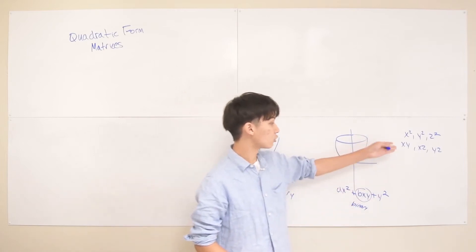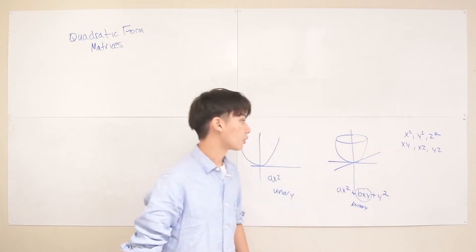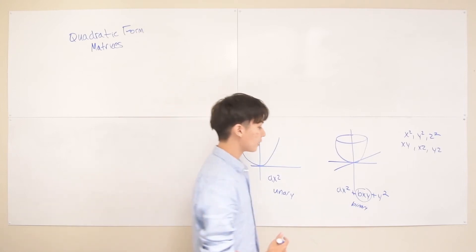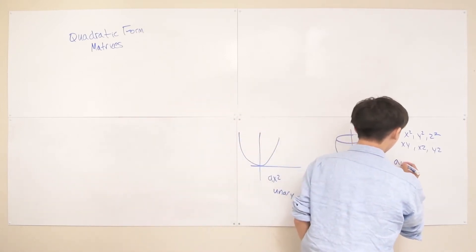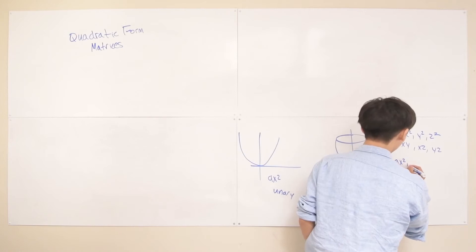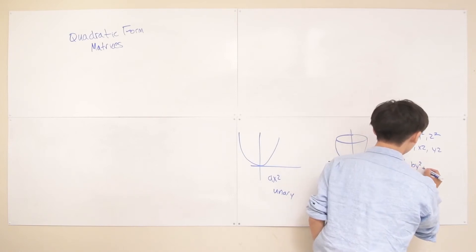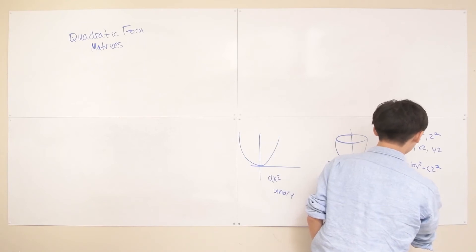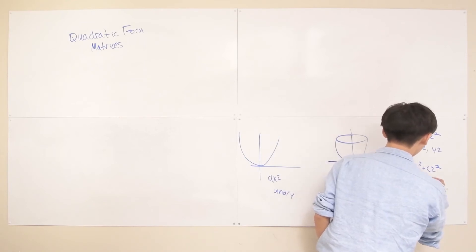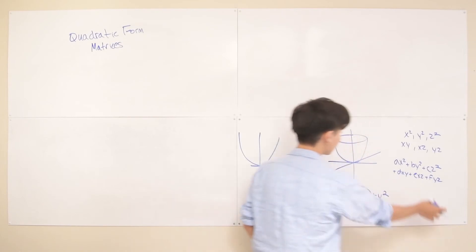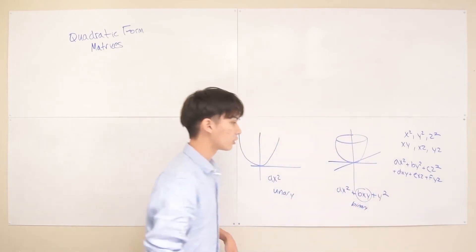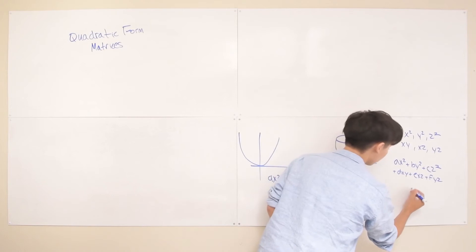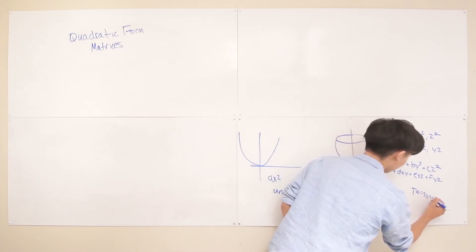We call this the ternary quadratic form — the third level. The ternary quadratic form polynomial has six terms because you have to account for all the combinations between the variables. The general formula is ax squared plus by squared plus cz squared plus dxy plus exz plus fyz. This one can't have a graph because it's going to be in four dimensions.